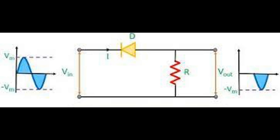During the negative half cycle of the input, the diode is forward biased so the negative half cycle appears across the output.